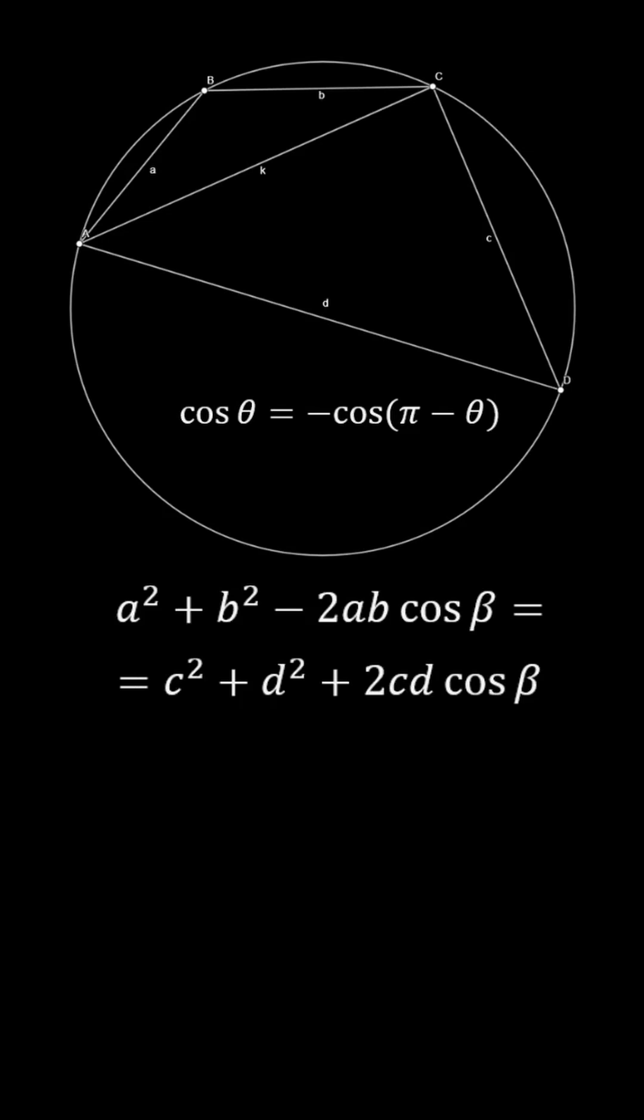For the other triangle, the cosine of the angle will be the negative of the first angle, since again the opposite angles of a cyclic quadrilateral are supplementary. Now we have this very nice relation.